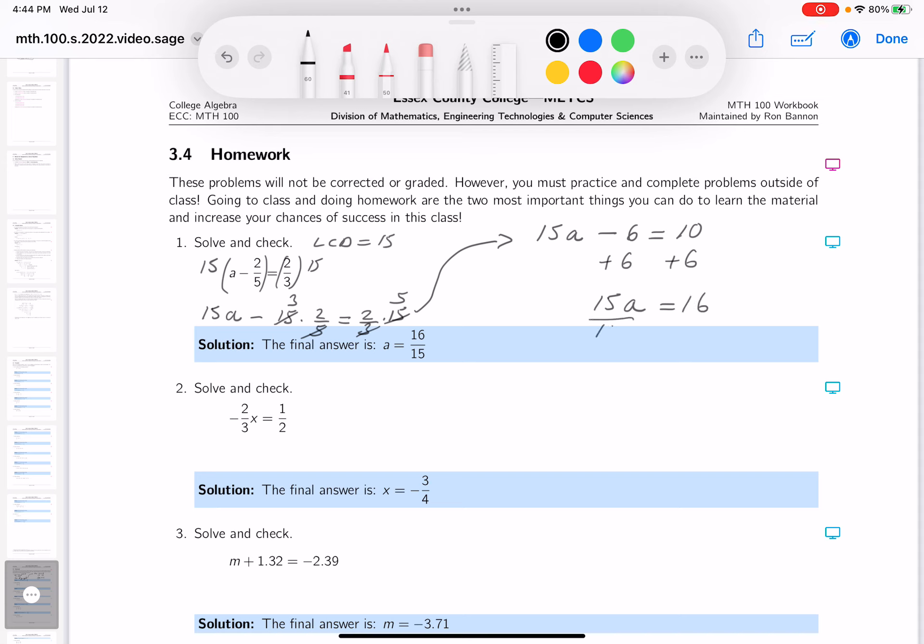What do you do now? Divide both sides by the variable's numerical coefficient. What do you get? A equals 16 fifteenths.